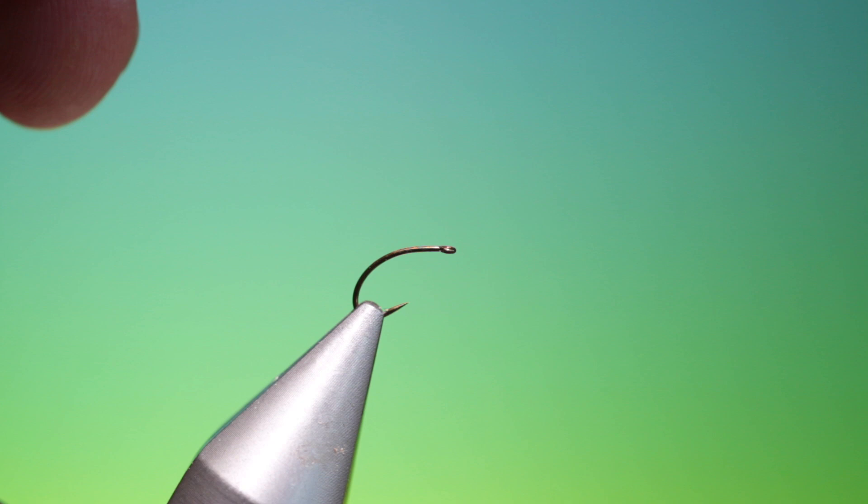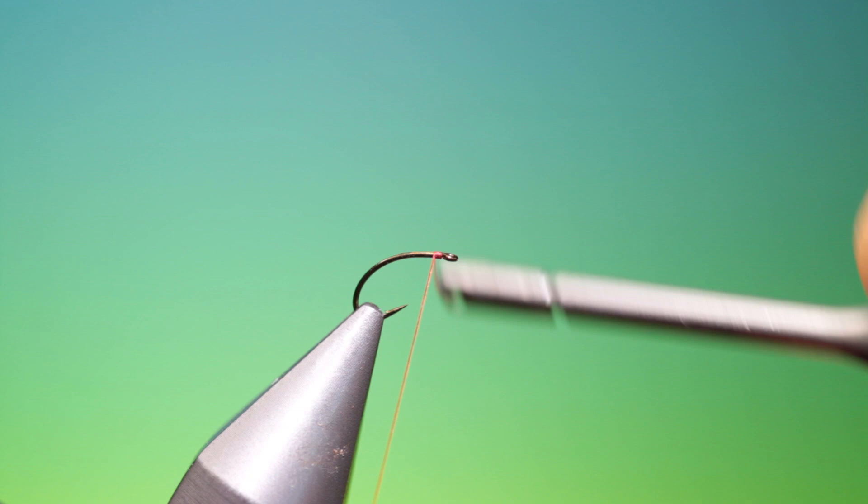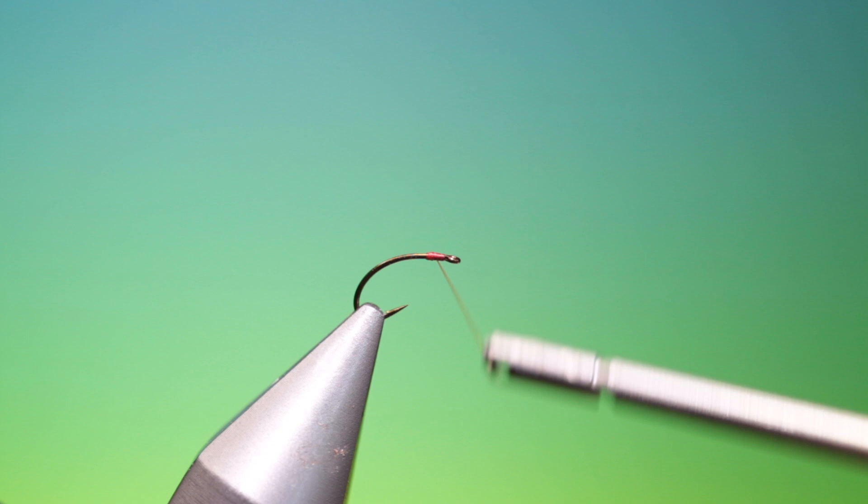So take our tying thread, this is sheer 40 nought red. And just attach this right behind the hook eye. And we just want a few millimetres. Remove that.